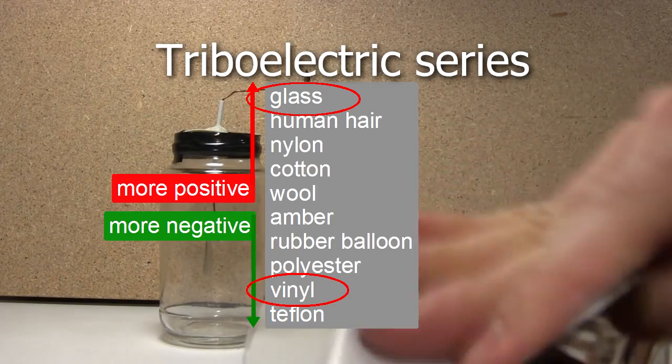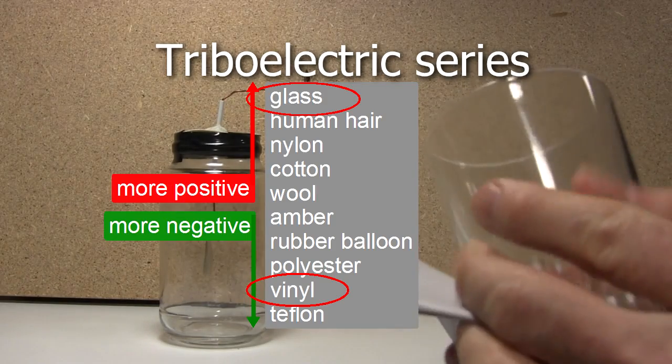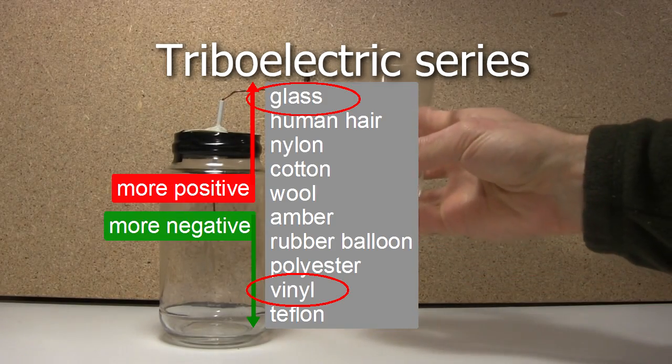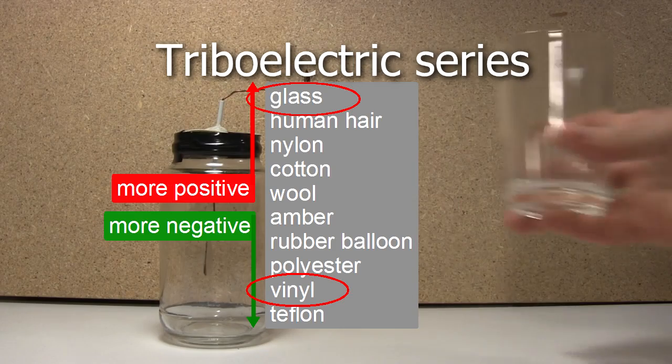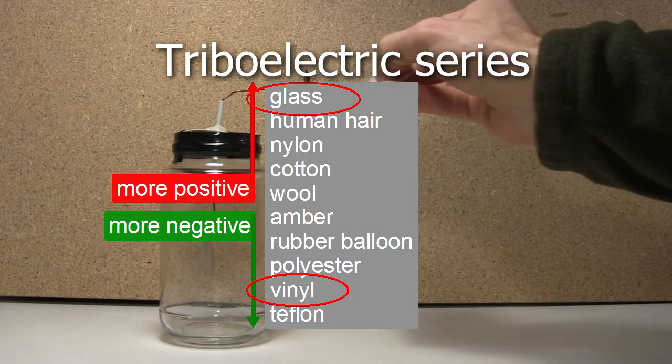And now you see why vinyl is on the negative side of the triboelectric series, and glass is on the positive side of the triboelectric series. Rubbing vinyl with glass makes vinyl negative and glass positive.